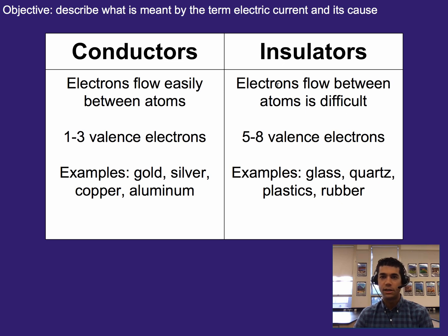Insulators. Electron flow between atoms is difficult. This is because they have nearly complete valence electron shells, usually in the five to eight range for that. Some examples are glass, quartz, plastics, and rubber.